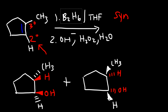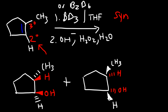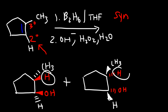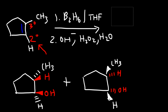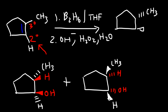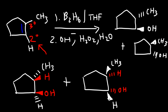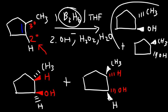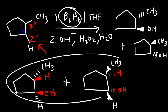Sometimes instead of seeing B2H6, you might see BD3 or B2D6. On an exam, you won't see the hydrogen atoms shown, so the product will only show the relationship between the methyl and the OH group — and those two will be opposite to each other. Using B2H6 or BH3, you get two products that appear to have the methyl and OH anti to each other, but it's not true anti addition because the methyl group was already present.